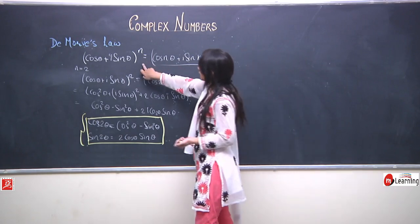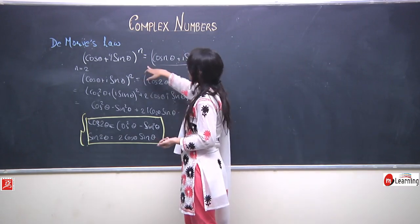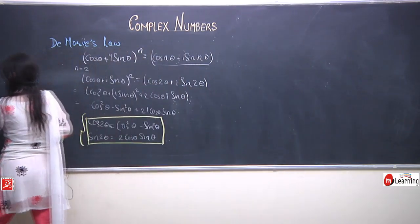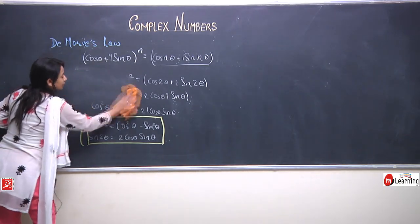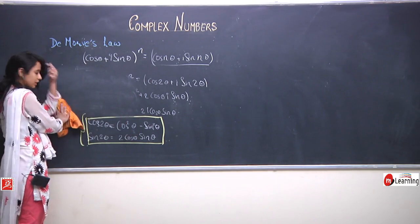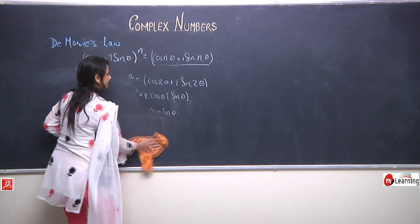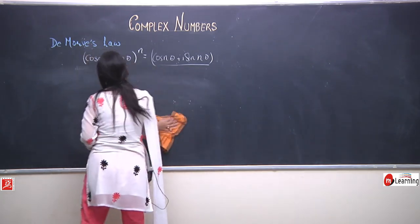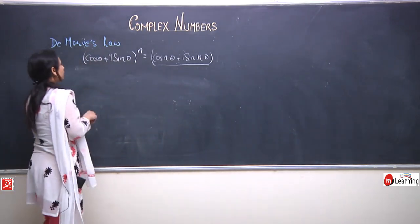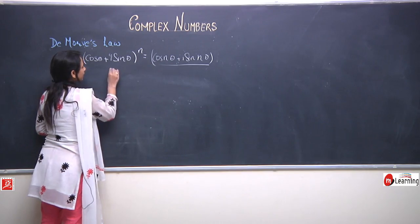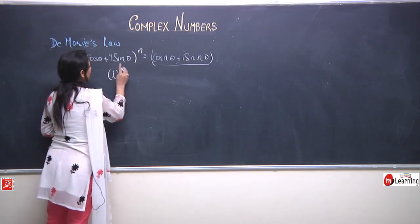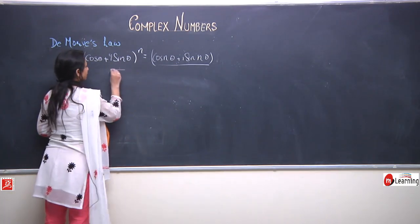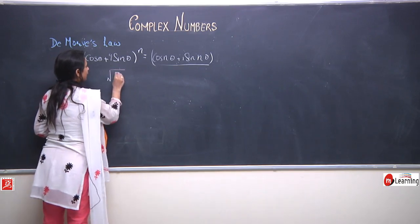This equation — De Moivre's law — even gives us a way to find the square root of any complex number. For example, let us say I want to find the 6th root of i, that is, i to the power 1 by 6. This means I want to find a complex number such that when I raise it to the power 6, I get i.